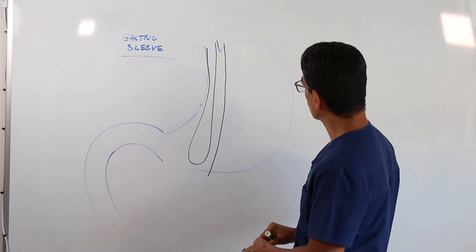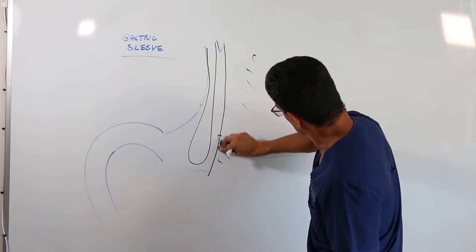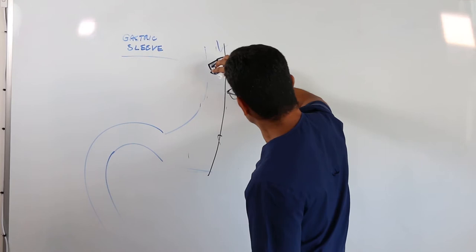Once it's done, all this stomach here, which is about 70% of your stomach, is going to be removed through one of the little holes. And then the tube that I put inside is removed, and you end up with a narrow stomach.